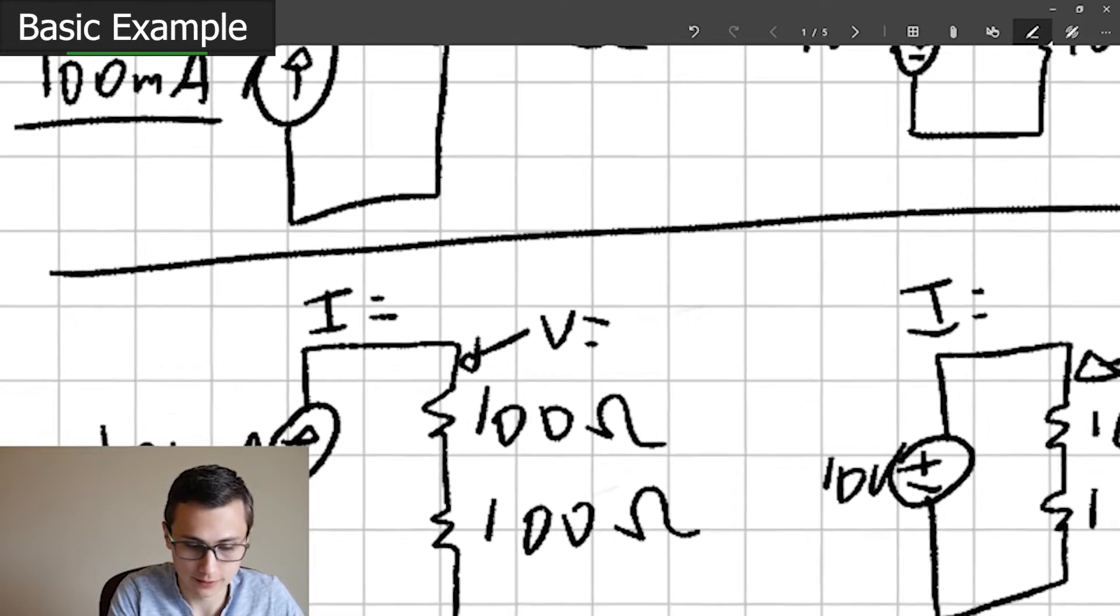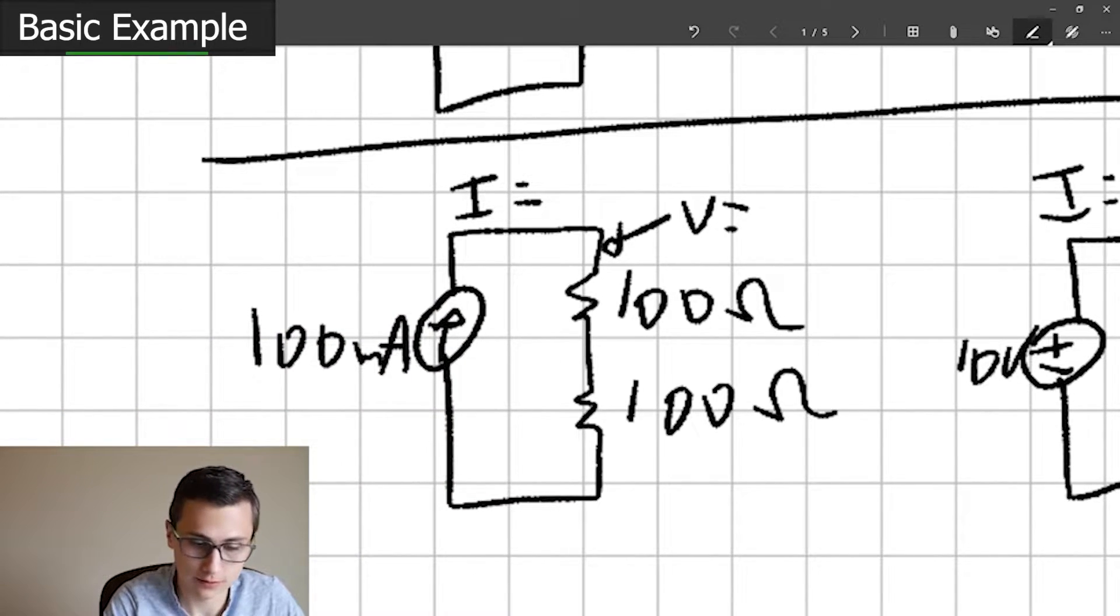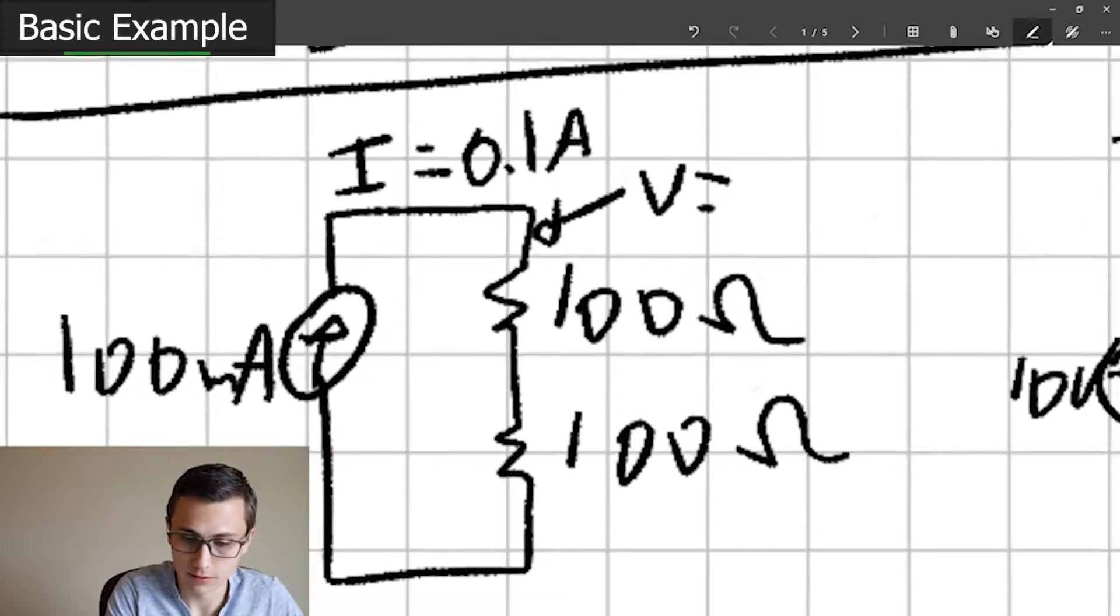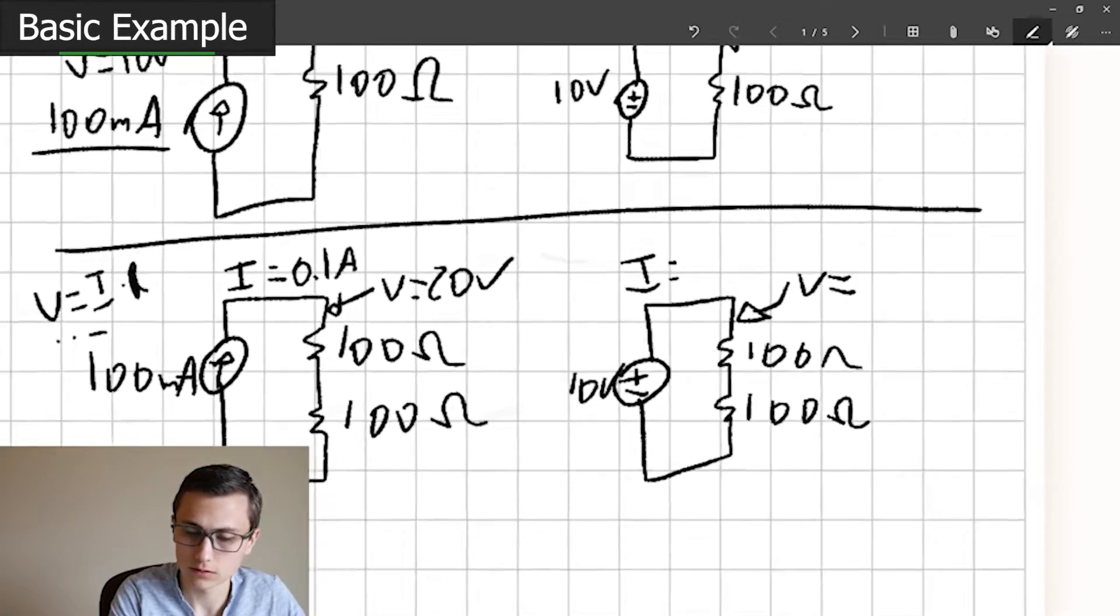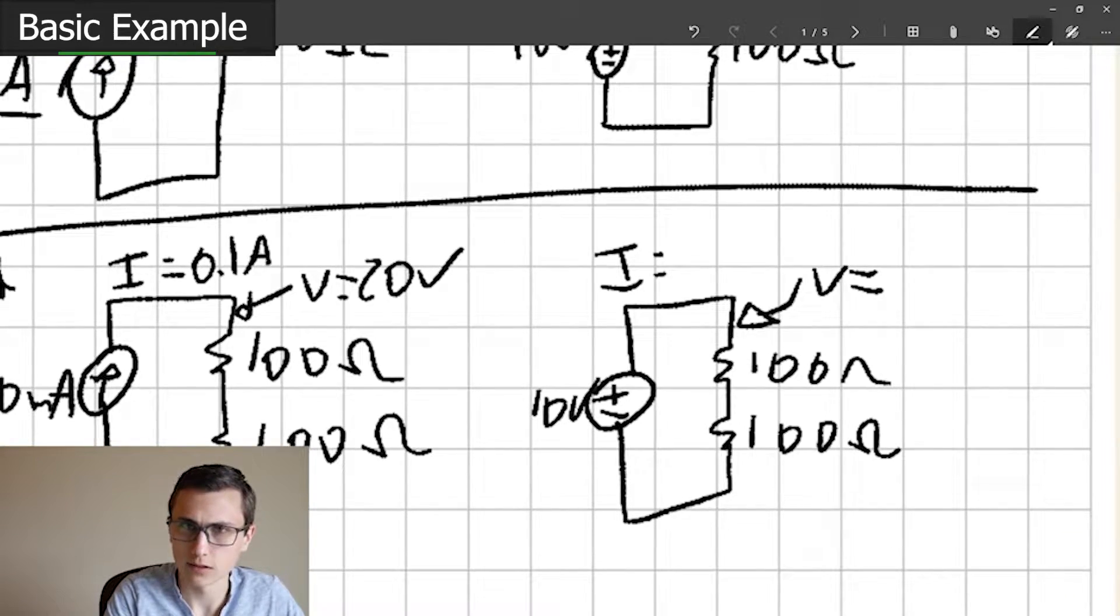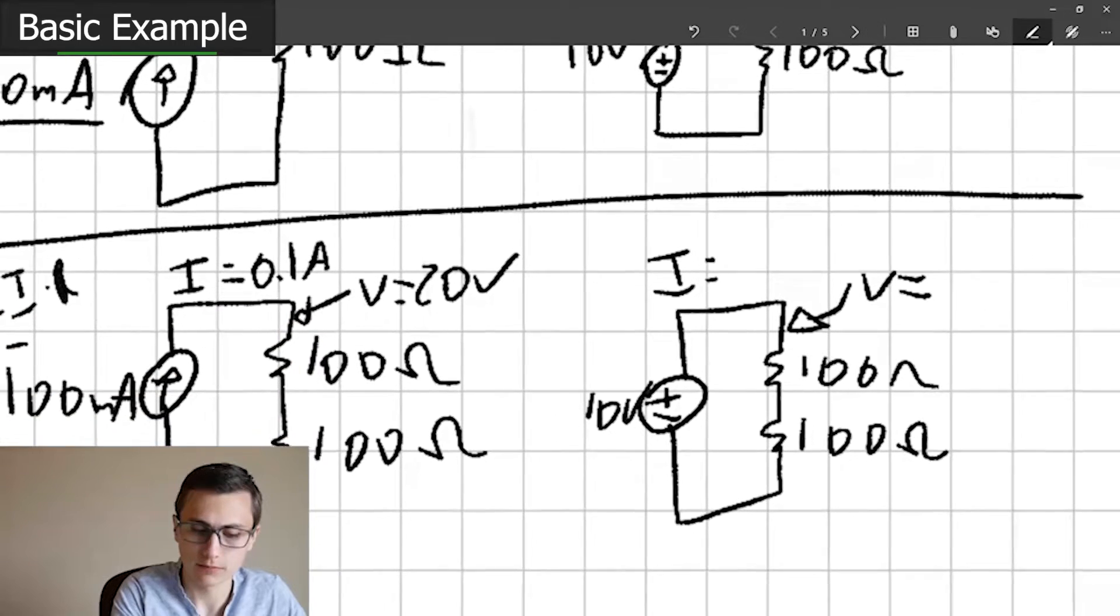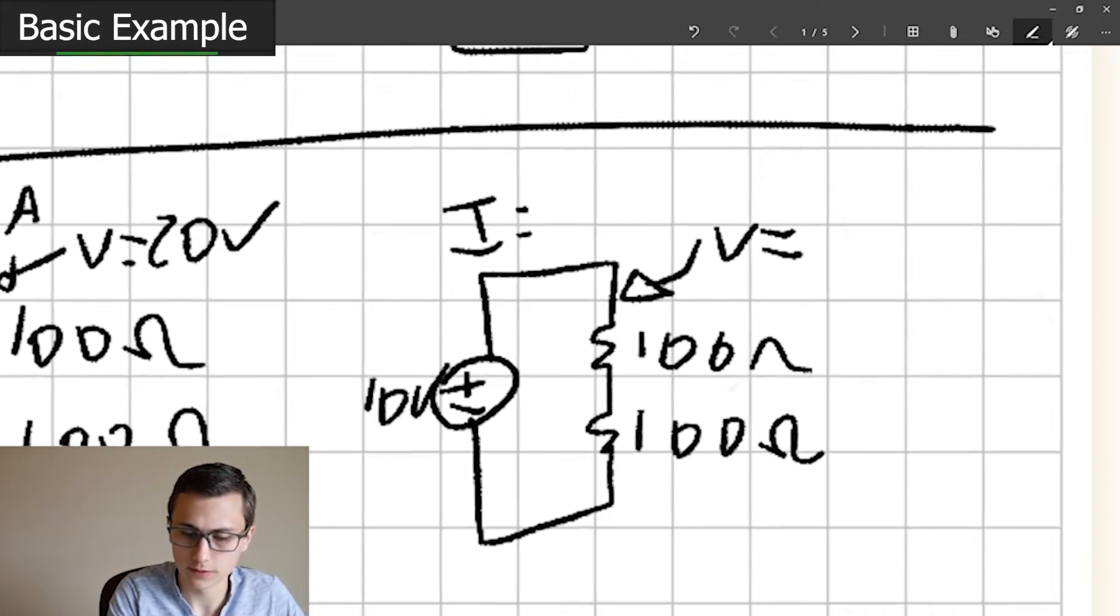Let's think about the voltage and current again. In the current source, we've got 0.1 amp again, right? Voltage, same thing. V equals I times R, 0.1 times 200 ohms, 20 volts. Interesting. Used to be 10, now it's 20. Current is the same.